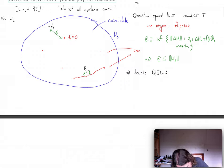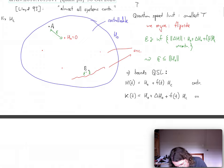So if you consider, for example, our controllable system given by H0 plus F of t HC, and you consider a modification, let's call it K of t, which is given by the uncontrollable system H0 plus delta H0 plus F of t HC. So this is controllable, this is uncontrollable.